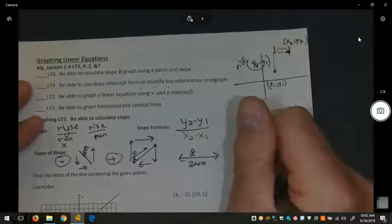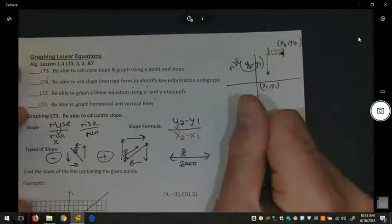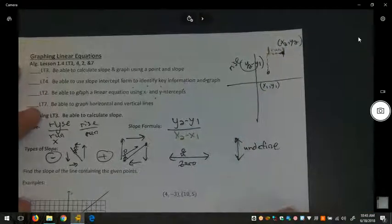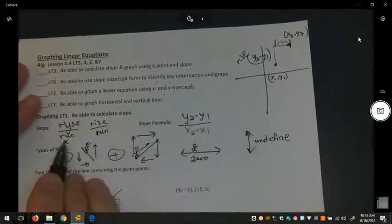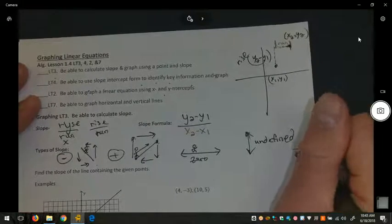And if we have the impossibly steep, unless you're a rock climber, this is an undefined slope because it has no run, no denominator. So if the denominator is zero, that number is undefined.